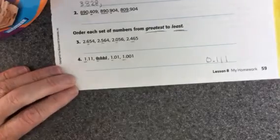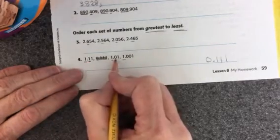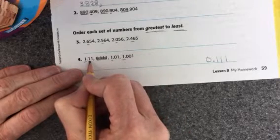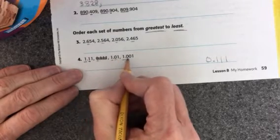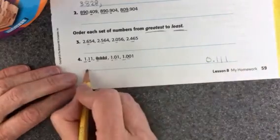Don't even worry about that one anymore. Now you're looking for the greatest number, so you need to look at the tens column now. I have a 1 in this tens column, a 0, and a 0. So I need to choose the one that is the largest and put it first.